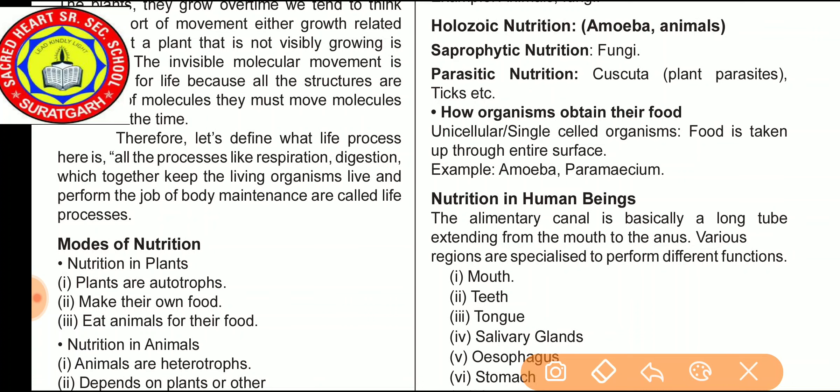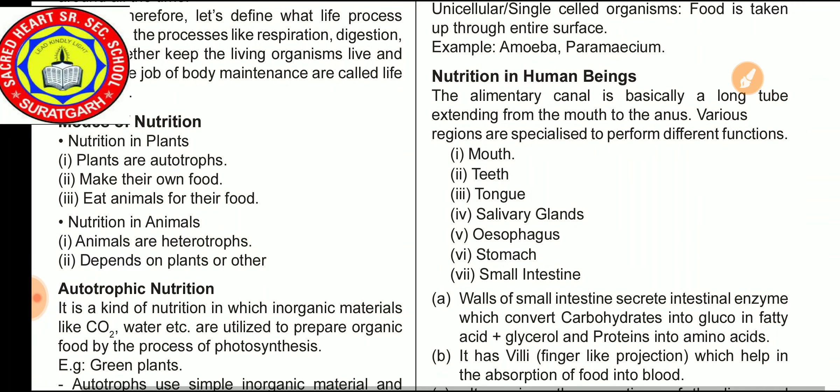Now we discuss nutrition in human beings. The alimentary canal is basically a long tube extending from the mouth to the anus. Various regions are specialized to perform different functions. The human digestive system is divided into two parts: the digestive tract or alimentary canal, and digestive glands. The digestive tract includes the mouth, oral or buccal cavity, pharynx, esophagus, stomach, small intestine, large intestine and anus. The small intestine is further divided into duodenum, jejunum and ileum; and the large intestine into cecum, colon and rectum.